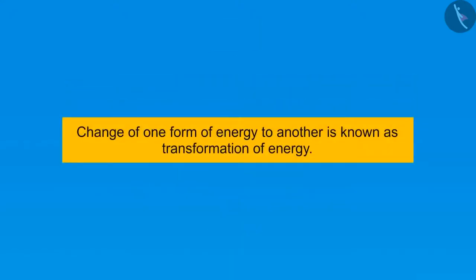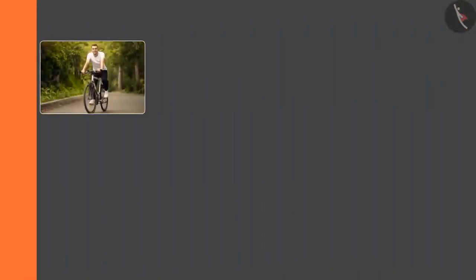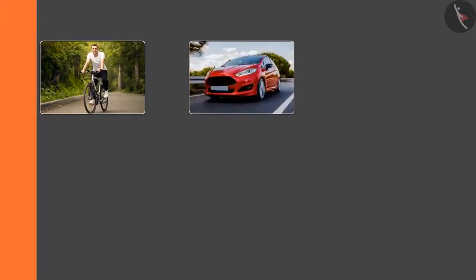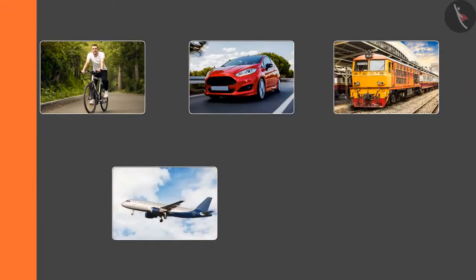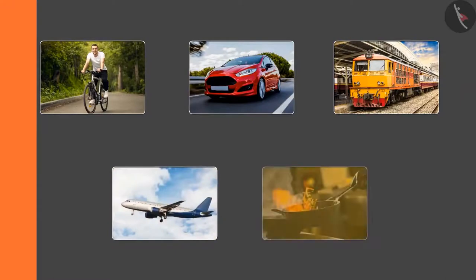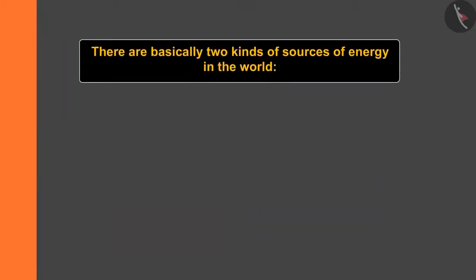The change of one form of energy to another is known as transformation of energy. If you look closely, then from a moving bicycle to a moving car, from a moving train to a flying aircraft, from cooking food to the energy taken from the food — each and everything is an example of transformation of energy.